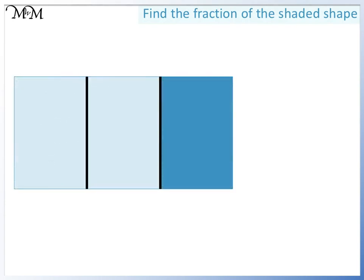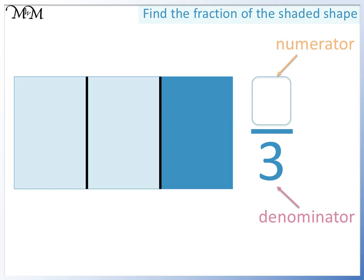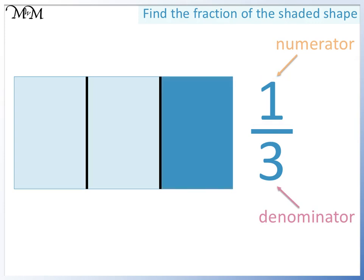Let's look at another example and try to work out what fraction this shape is showing. We'll start with the denominator — the total number of parts that the shape is divided into. So let's count: one, two, three. The denominator is three. Next we'll find the numerator, which is the number of parts that have been shaded in. One part has been shaded in. The fraction is one third — one out of three parts have been shaded in.